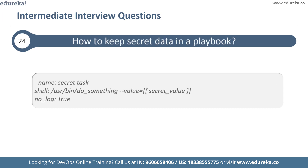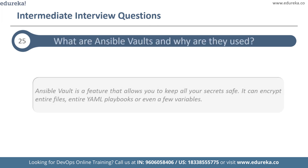The next question is: how to keep secret data in a playbook? Suppose you have a task you don't want to show output for when using the -v verbose mode. You can use the no_log attribute to keep verbose output but hide sensitive information from others. This attribute can also apply to an entire play. As you can see on screen, this is the code snippet used to keep sensitive data in a playbook.